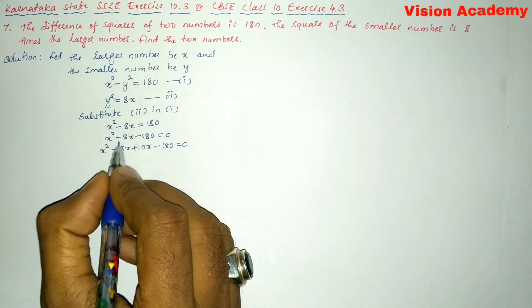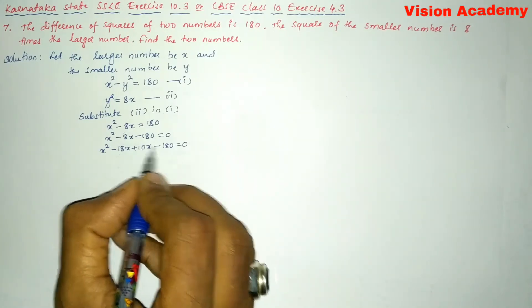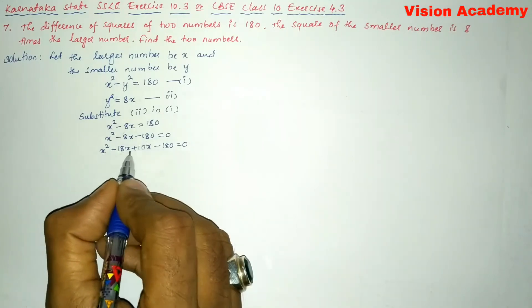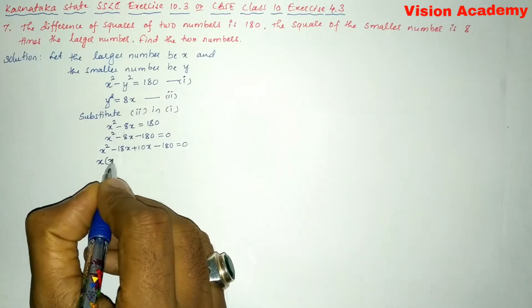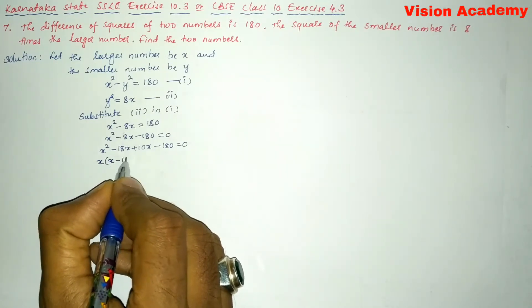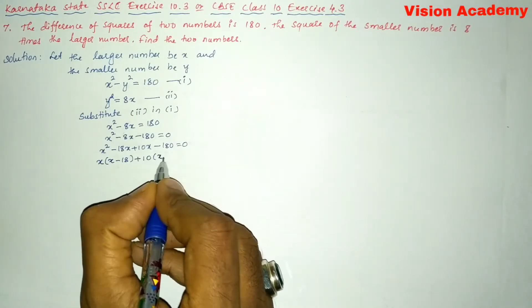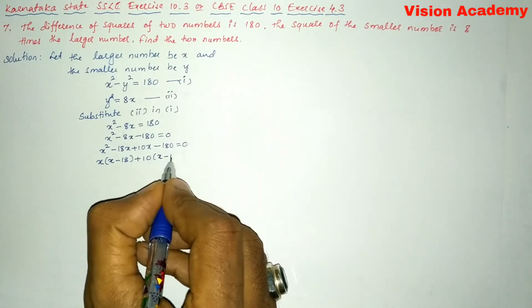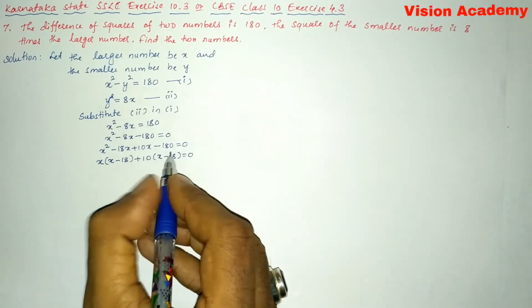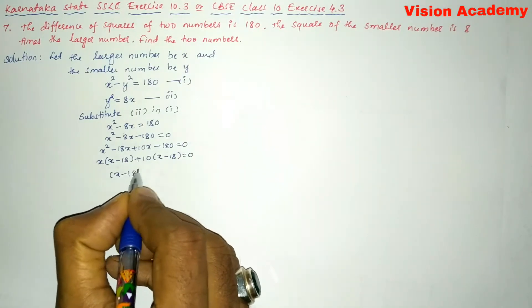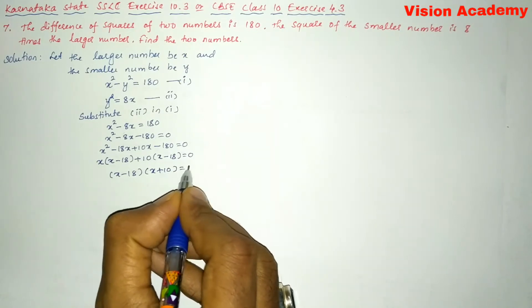You can see 10 - 18 gives us -8 and -18 × 10 = -180. Let us take out the common factors. x is common: x(x - 18), and 10 is common: 10(x - 18). So (x - 18)(x + 10) = 0.